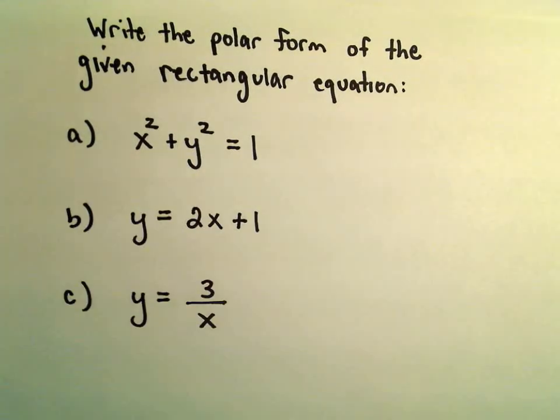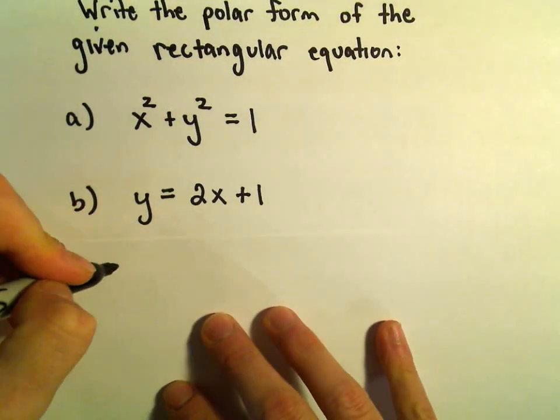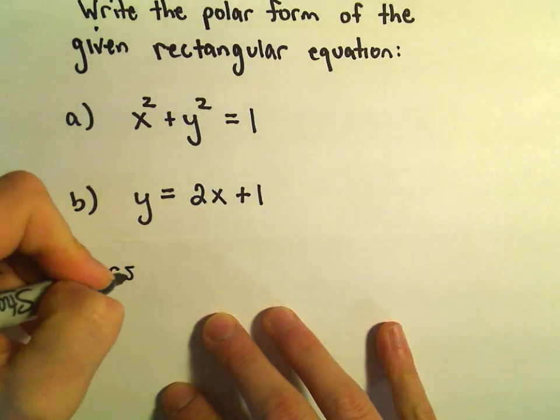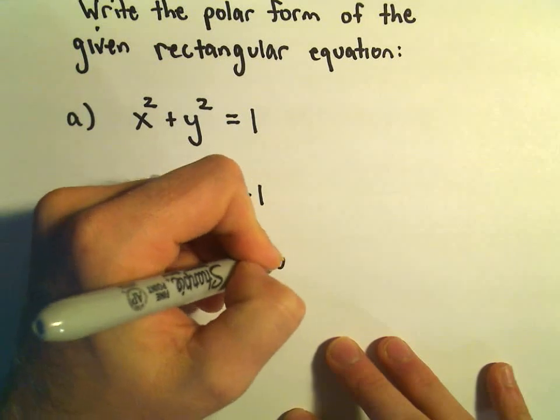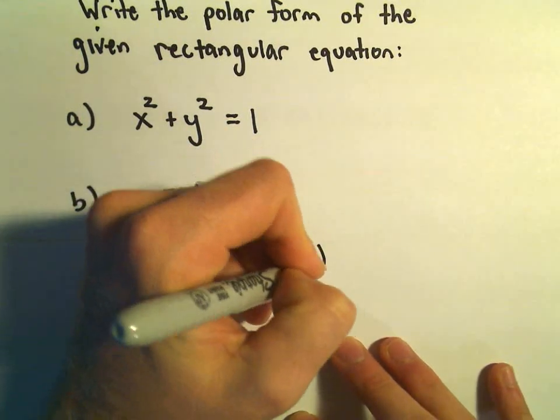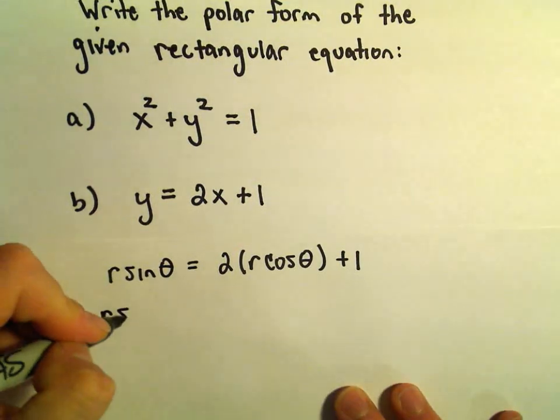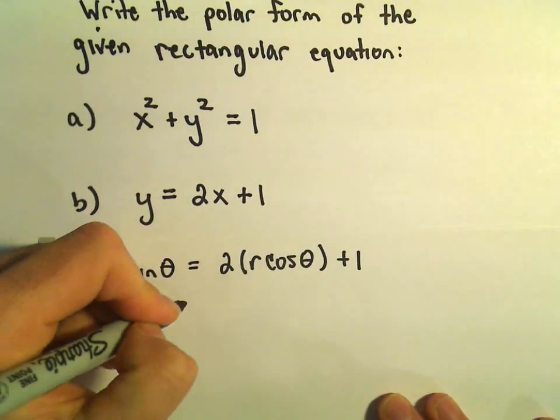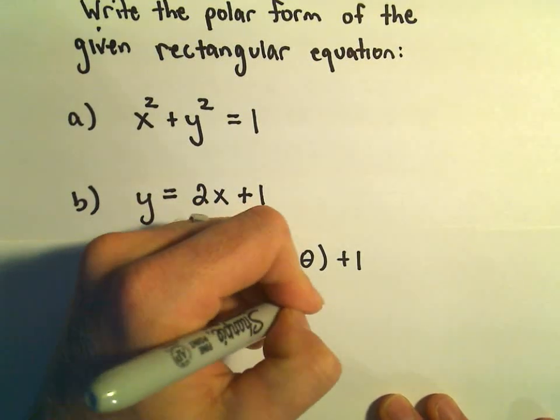So let's do the next one here. So y equals 2x plus 1. So let's see, we saw that y is going to be r sine theta equals 2 times x is going to be r cosine theta plus 1. Well, alright, so we've got r sine theta equals 2r cosine theta plus 1.